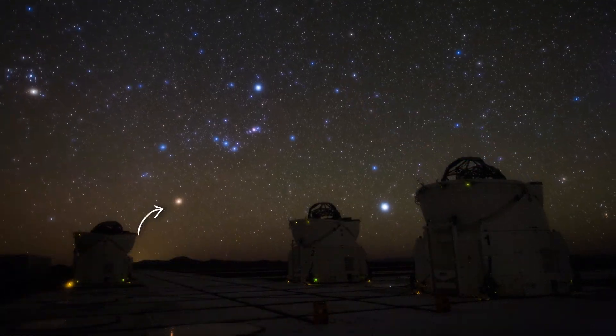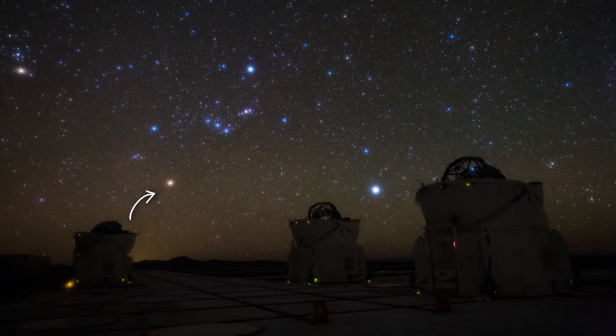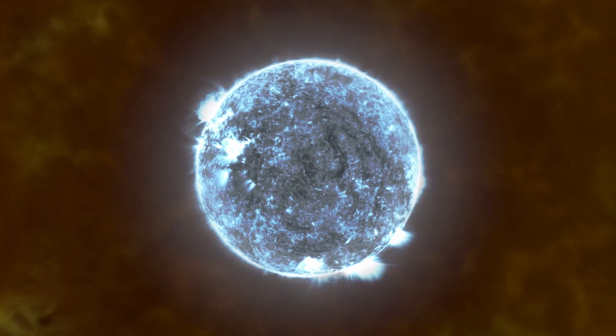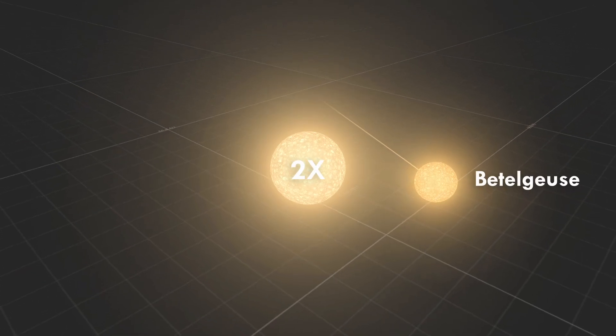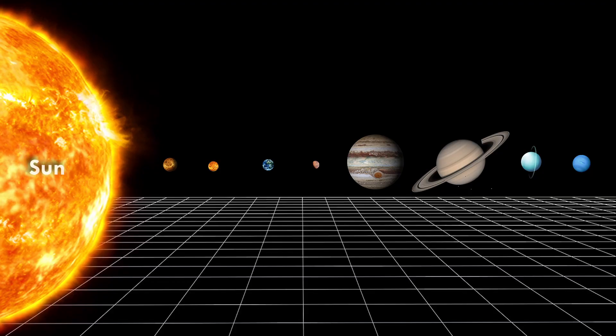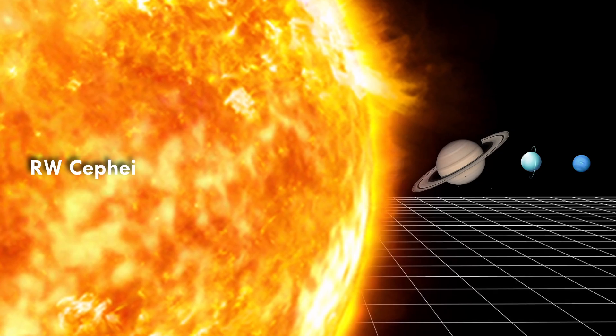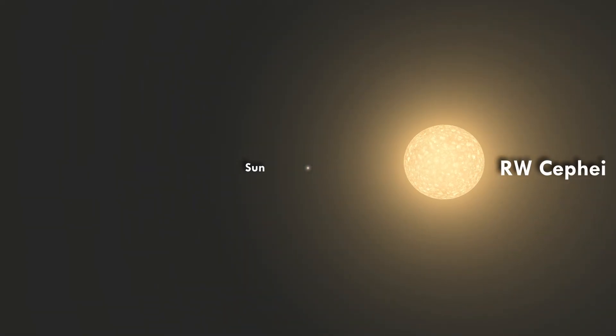It's a lot like Betelgeuse, both in age and characteristics, but it's way bigger and more massive. It could be up to twice the size of Betelgeuse and if it were in our solar system, it would stretch all the way to Jupiter's orbit. It's about 1500 to 1600 times the size of our Sun.